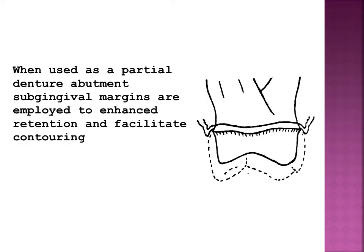Subgingival placement of finish lines is necessary in most crown preparations for teeth that are to be used as abutments for removable partial dentures. The subgingival finish lines establish the necessary clearance for precise contouring of the crown to fulfill the demands placed upon it for support of the removable partial denture.